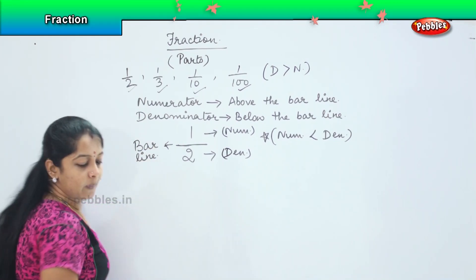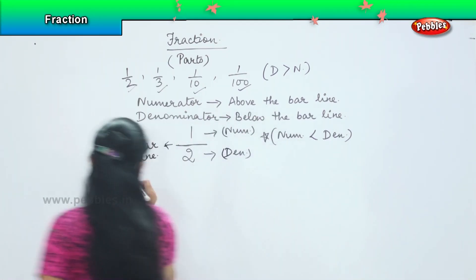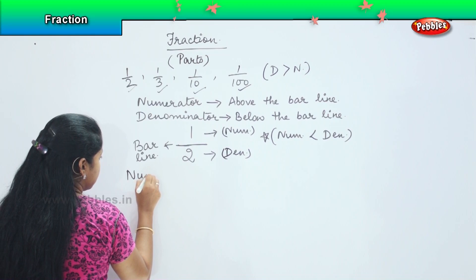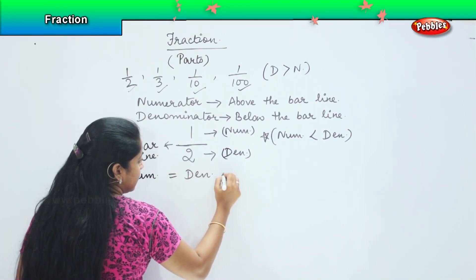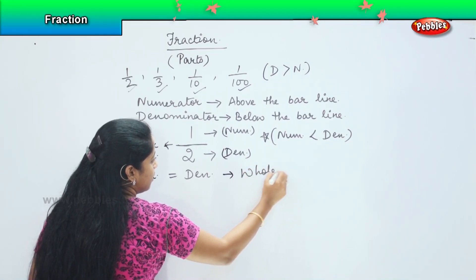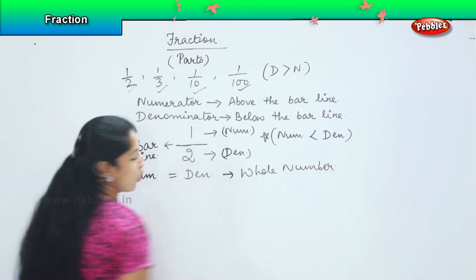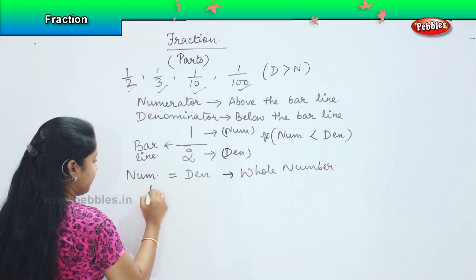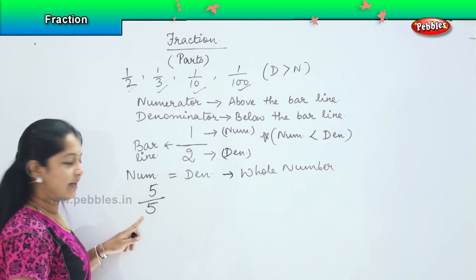If suppose numerator is equal to denominator, then it becomes the whole number. What do you mean by that? For example, if I write 5/5, both my numerator and denominator are same. So in this case, 5 equals 5, it becomes the whole number 1.